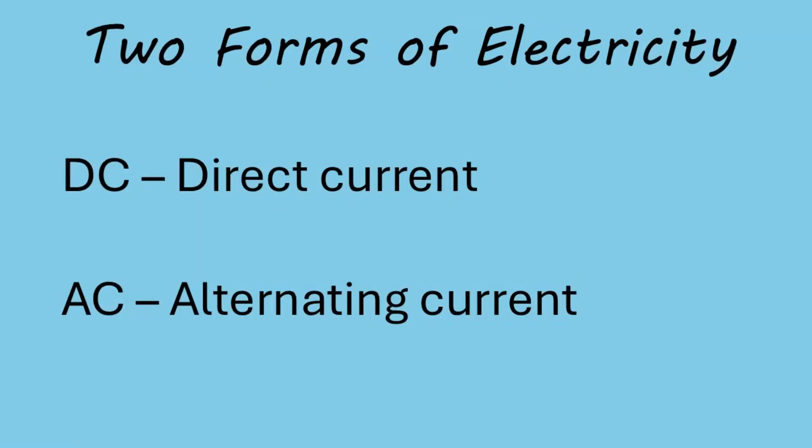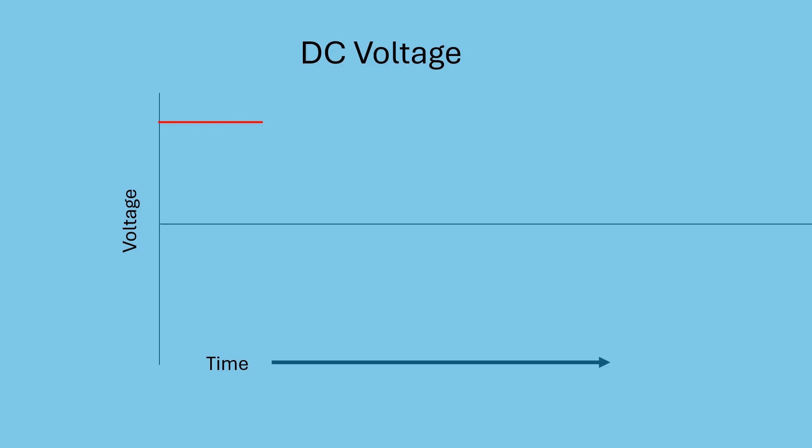Electricity comes in two basic forms. You have direct current, which is DC, and alternating current, which is abbreviated AC. Let's start with DC because it's the simplest. DC is direct current. It's often produced by sources like batteries or solar panels. In DC, the voltage remains constant over time. Here's a graph showing how DC voltage behaves. It's a straight line, always pushing in one direction only.